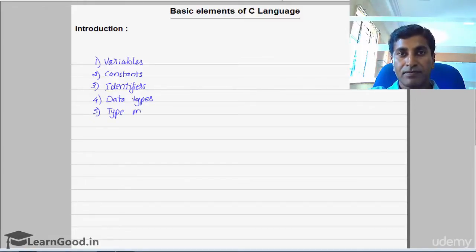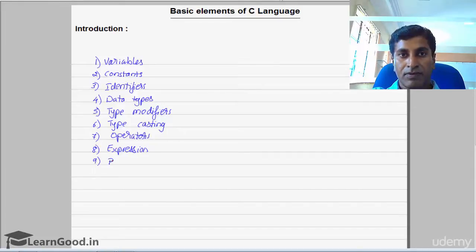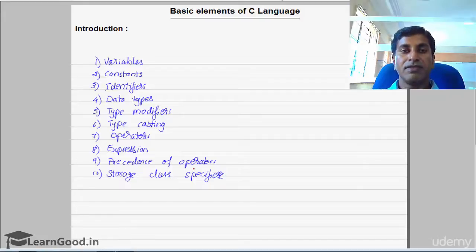We'll see about type casting, then we'll see about operators, expression, precedence of operators. Then last is storage class specifiers. So all these basic components, basic elements of C language, we are going to discuss in this chapter.